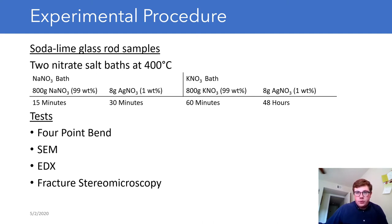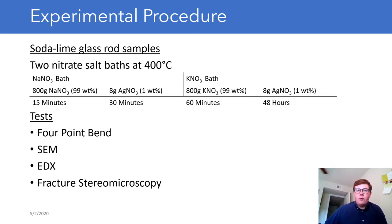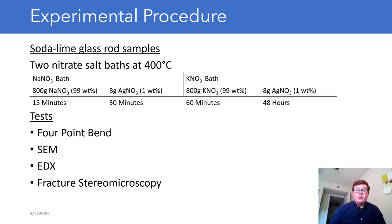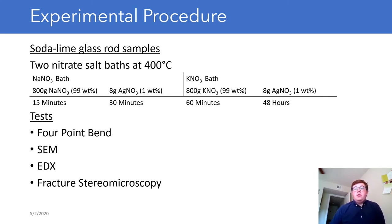For the experimental procedure, we used two baths: a sodium nitrate bath and a potassium nitrate bath to produce Na⁺ and K⁺ ions respectively. We also included 8 grams (1 weight percent) of silver nitrate in both baths. Due to its small radius, silver nitrate won't have a strong strengthening effect, but it provides higher visibility on SEM and EDX. To measure diffusion with respect to time, we tested four different times: 15 minutes, 30 minutes, 60 minutes, and 48 hours. We used the four-point bend test with Weibull analysis to measure theoretical strength, SEM/EDX for diffusion profiles, and fracture stereomicroscopy to observe the effect of ion diffusion on fractures.